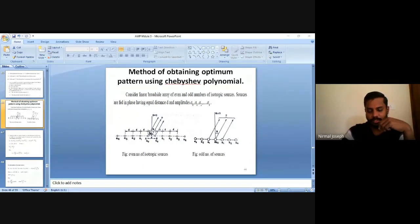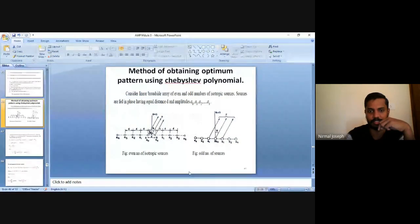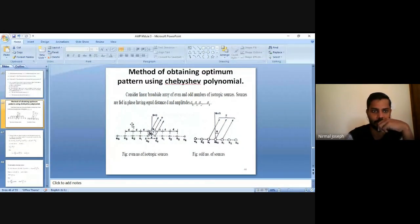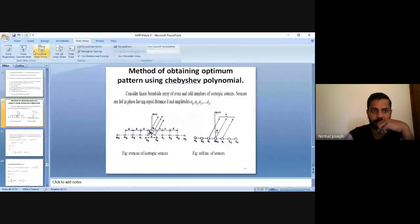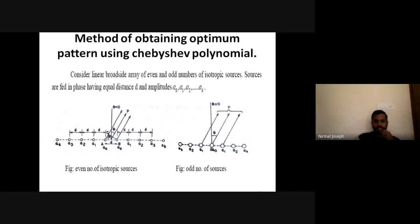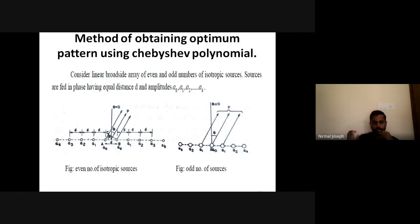Good morning. We will start from where we left in the last class. We stopped at the method of obtaining the optimum pattern using the Chebyshev polynomial — the Dolph-Chebyshev array. The Chebyshev polynomial is used for obtaining the optimum radiation pattern, meaning the major lobe will be maximum and side lobes will be suppressed as much as possible.